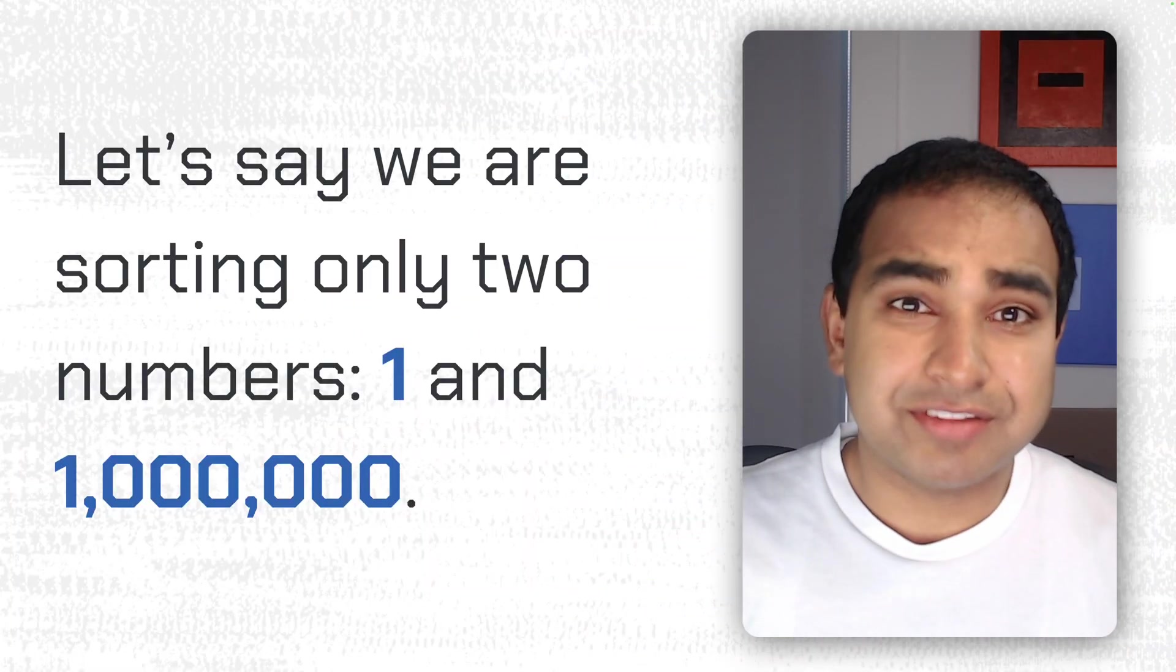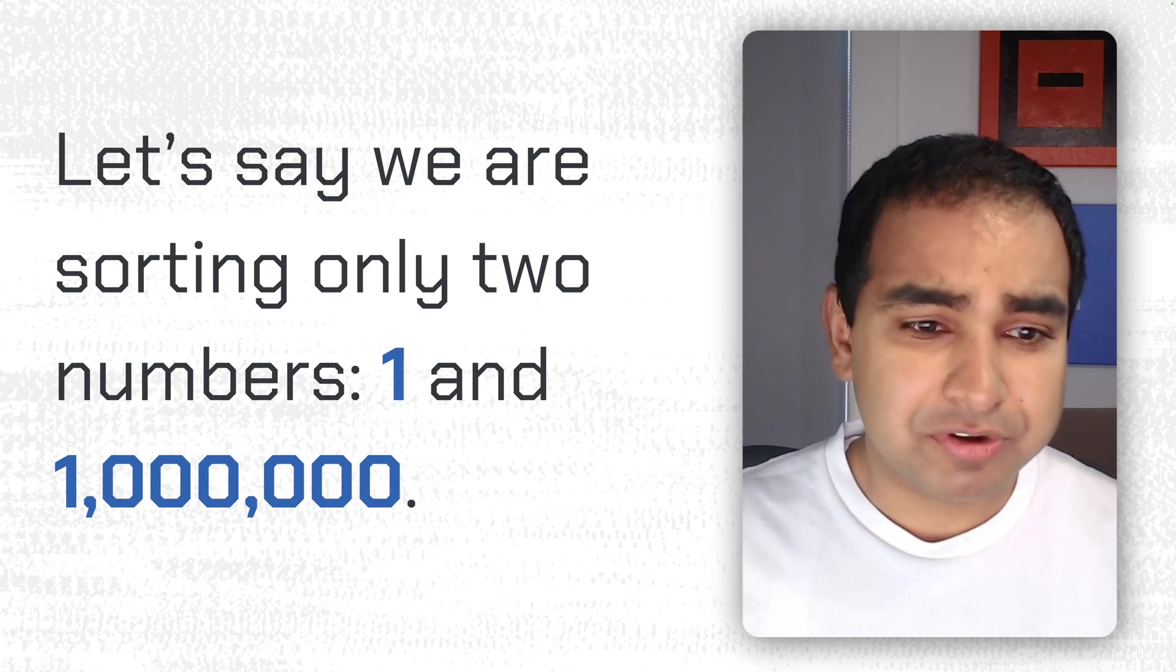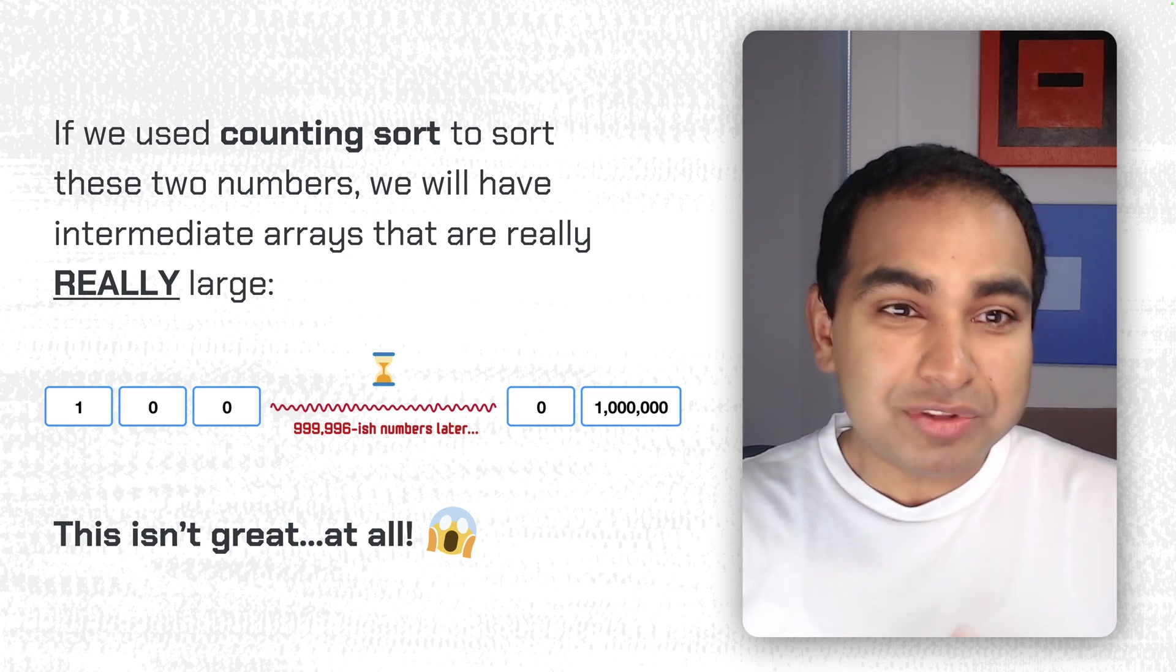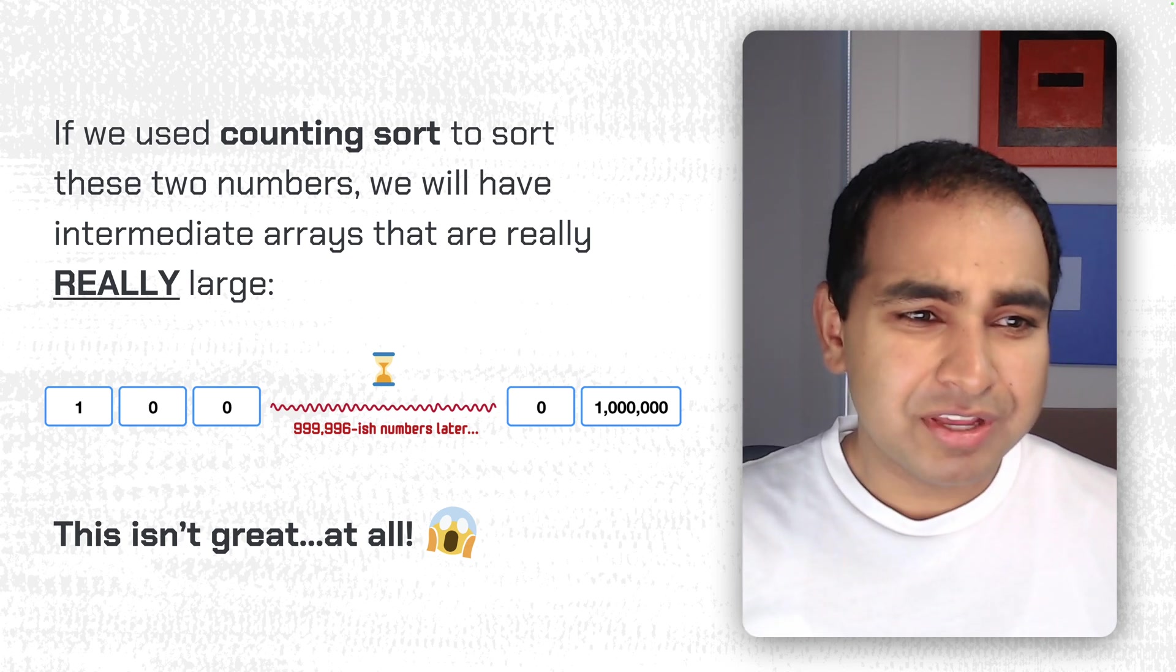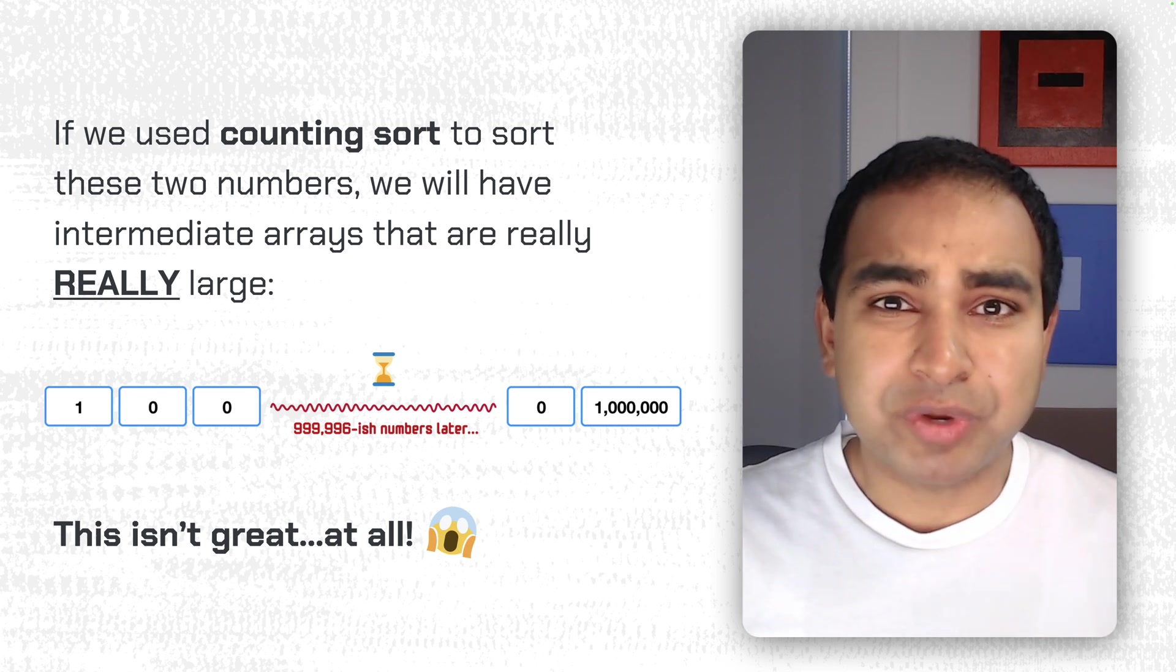So let's start with an example, to highlight how RadixSort and CountingSort are going to be very different. Let's say we're sorting only two numbers: 1 and 1 million. And so if we use CountingSort to sort these two numbers, we will have intermediate arrays, and these intermediate arrays will be really, really large, because the smallest number is 1, the largest number is 1 million.